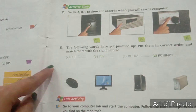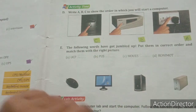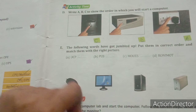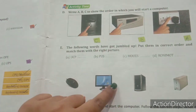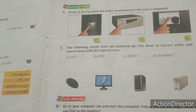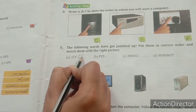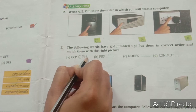Now question number E: the following words have got jumbled up — put them in correct order and match them with the right picture. You have got some words written in jumbled order and you have to write them correctly. The first word is U, C, P. Is there any part of the computer with those letters that we have studied in this lesson? Yes — we have studied CPU. So write CPU in the first blank.